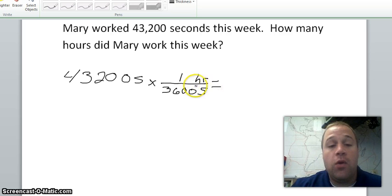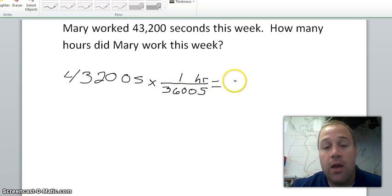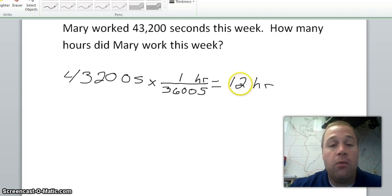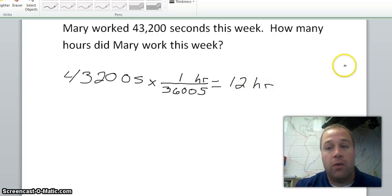So now to solve this math problem, you multiply across the top. So forty three thousand two hundred times one. And we're going to divide by everything below the line, which is thirty six hundred seconds. So basically we're doing forty three thousand two hundred divided by thirty six hundred. And when we do that we get twelve hours. Always make sure you write not only your answer, but the units for your answer if you want full credit.